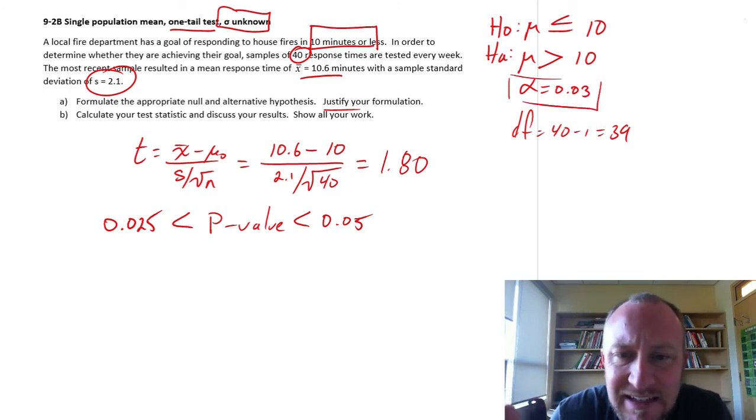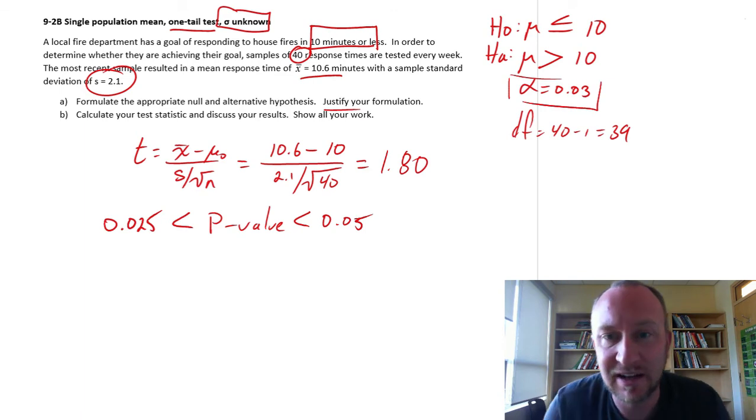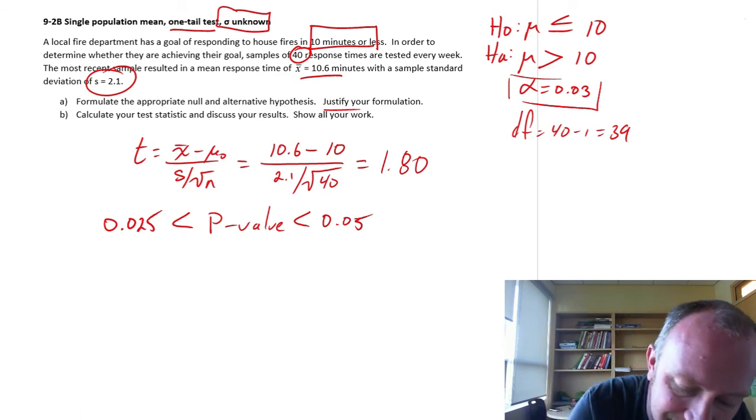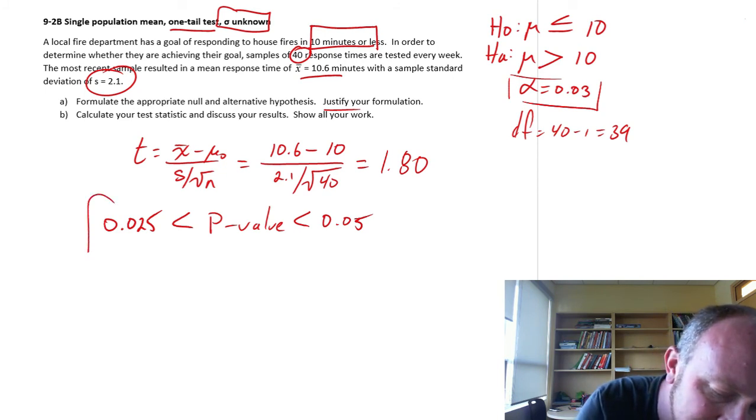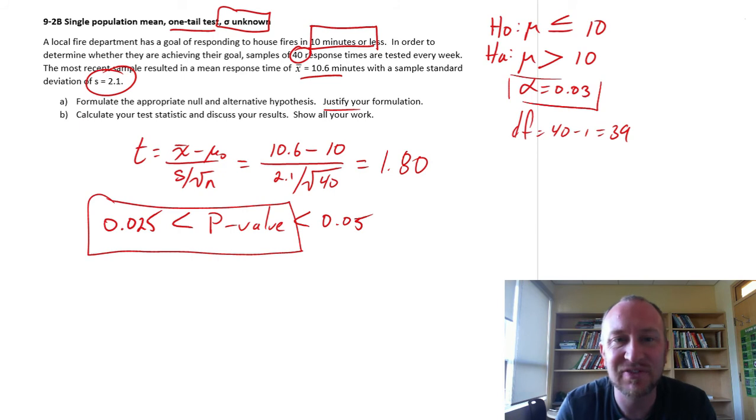Because now I can't actually draw a conclusion. Based on the approximations that we have to get using the t-distribution, well, here I can see it's less than 0.05, that's fine, but it's greater than 0.025. I don't have enough information here to know whether or not I can reject or not.